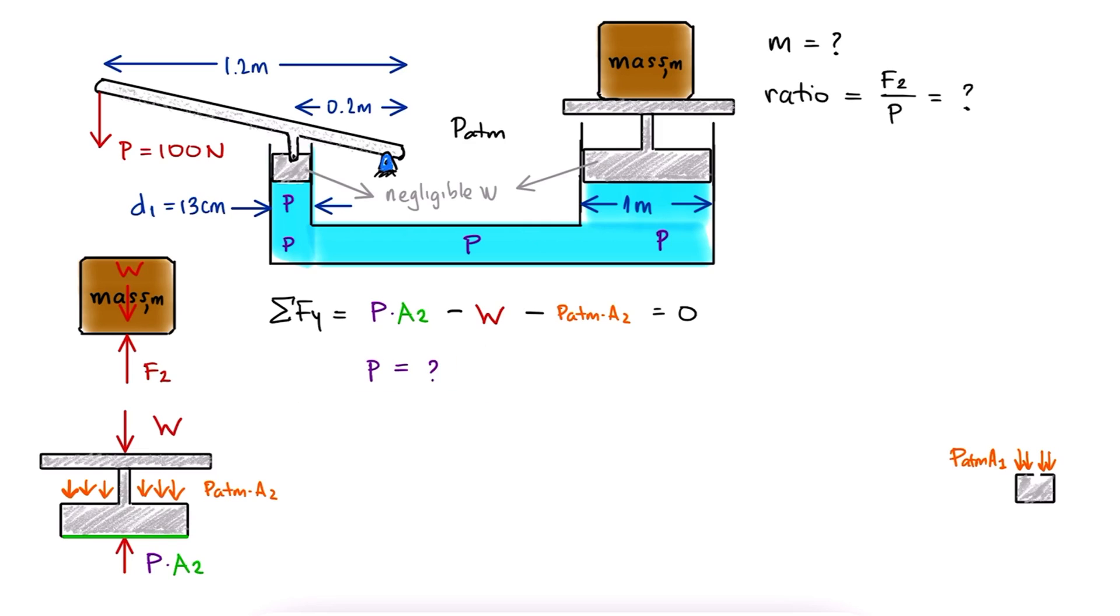To do this, we draw a free body diagram of the smaller piston. The piston is subjected to the force that the lever generates at B, going down, and the force caused by the pressure going up. In this case, the area refers to that of the smaller piston.